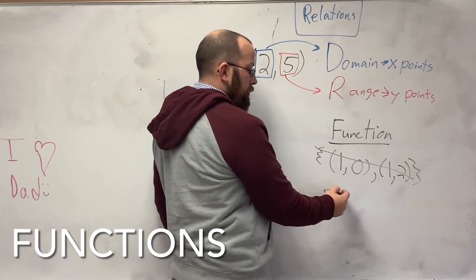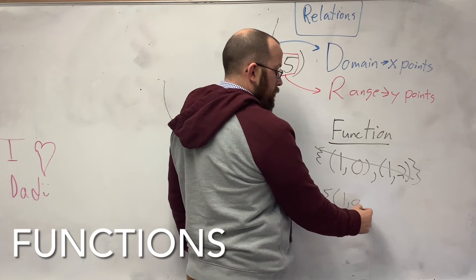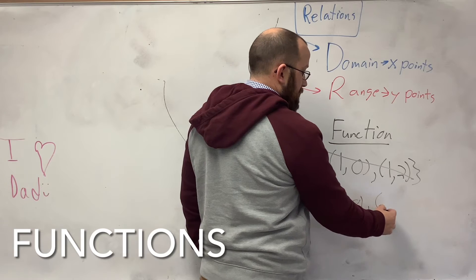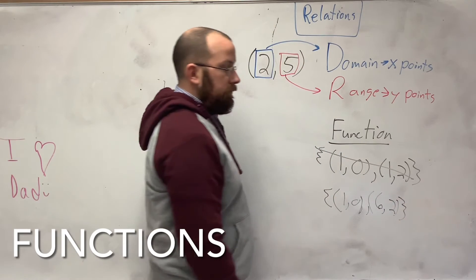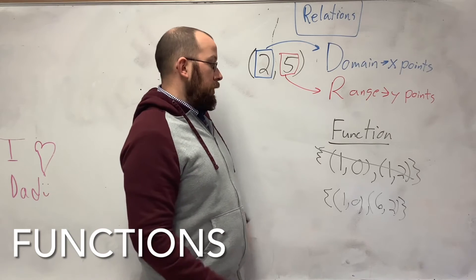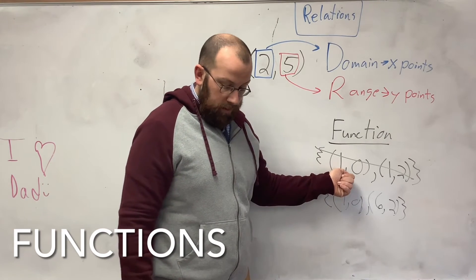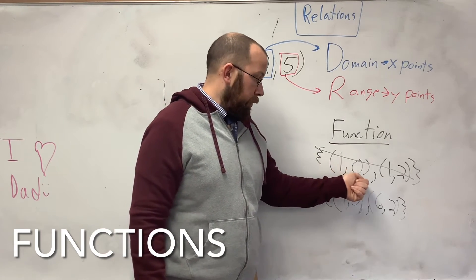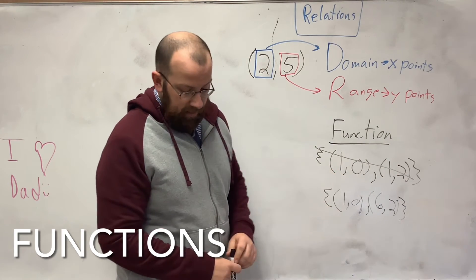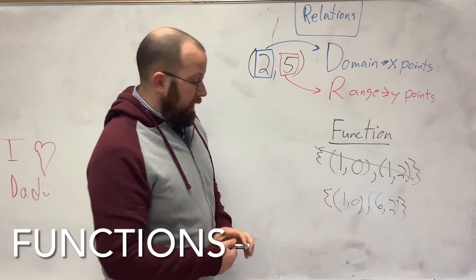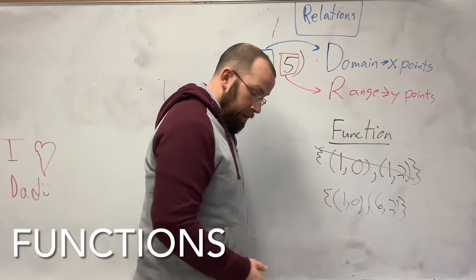What a function would be is if I have (1, 0), then like (6, 2). That is a function. It's that simple. The first coordinate can only be paired with one second coordinate. It can't be paired with another one. So this is a function. This is not a function. Now, let me show you what I mean by that.